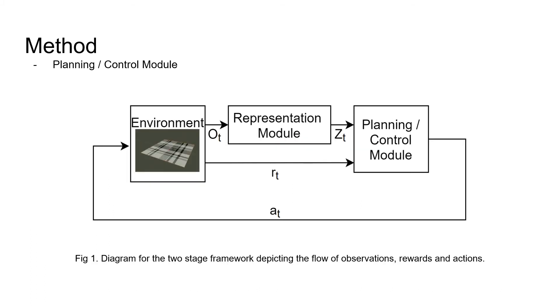The setup we have is as follows: an environment returns an observation O_t, an RGB image which is converted by the representation module into a suitable representation Z_t. This is passed through the planning control module which predicts an action a_t.